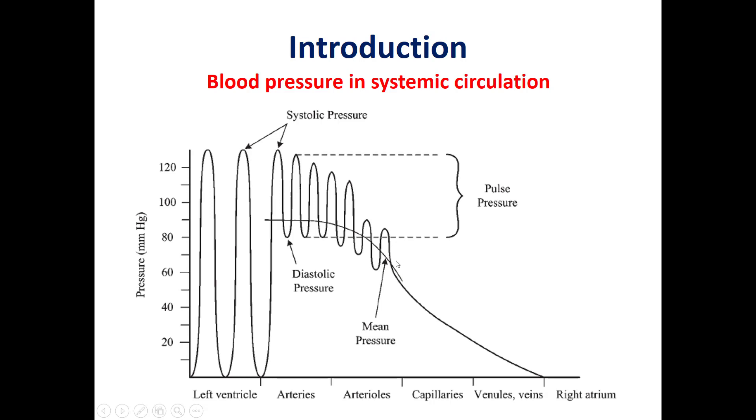In the pulse oximeter, what we really measure is this pulsation — the pulsation on the arterial side.